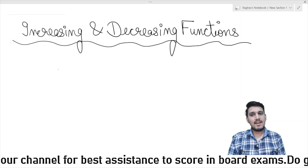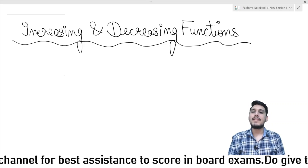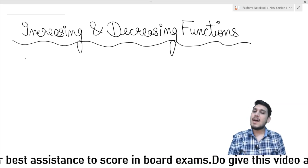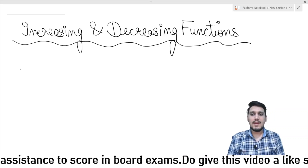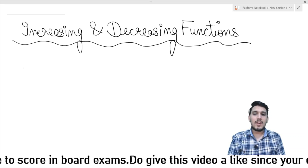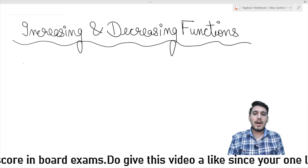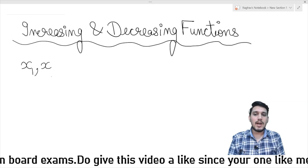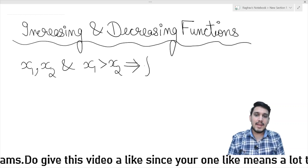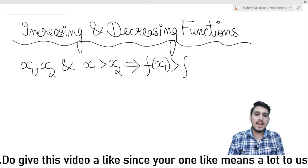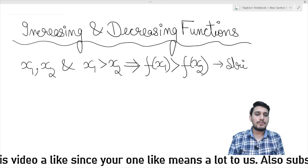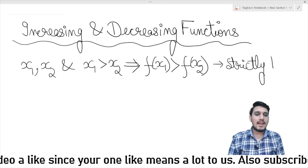So as you can see the heading is 'Increasing and Decreasing Functions.' We are going to look at brief insights from the previous lecture. Previously we learned that if you want to say a function is strictly increasing in an interval, and if you take x1 and x2 from that interval where x1 is greater than x2, then it implies that f(x1) is greater than f(x2). That defines a strictly increasing function.